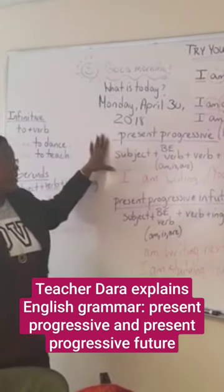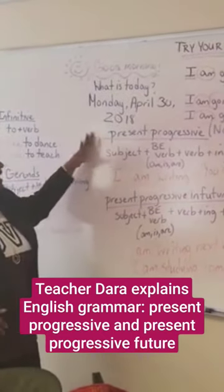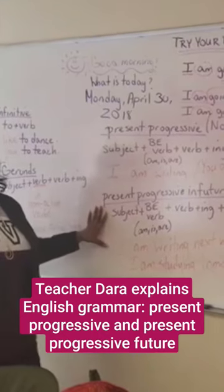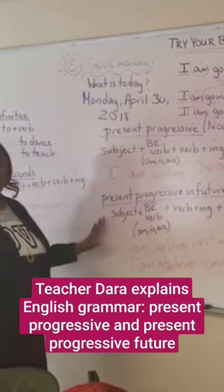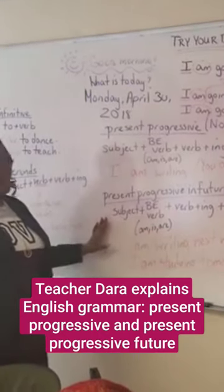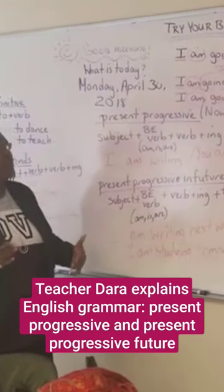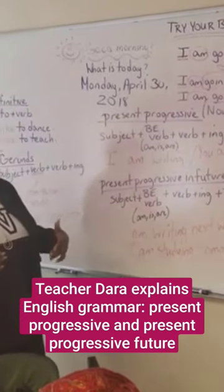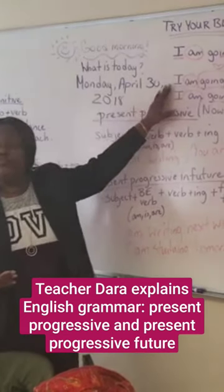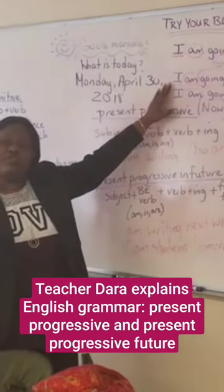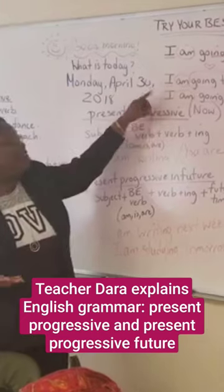We use the present progressive when we are talking about things right now, and then we also use the present progressive in the future — when we use future time, it becomes the future, so it's something we are continuously doing in the future. We also have something called 'going to,' which we use for future time and it means a plan.